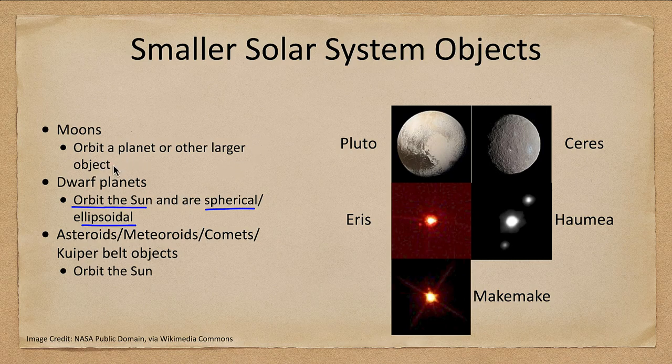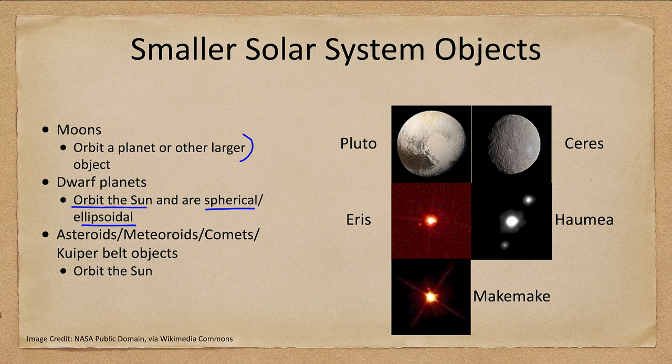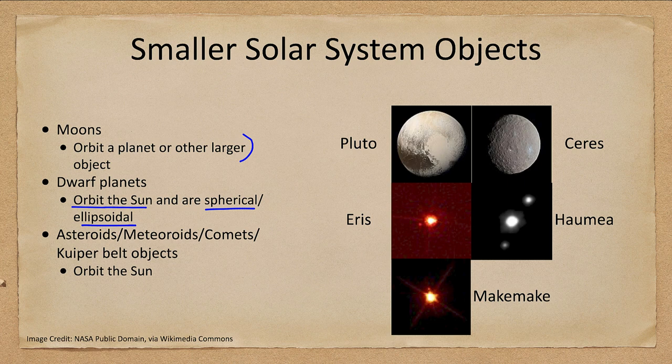And as I didn't emphasize, a moon is an object that orbits a planet or other larger object. So some of the moons are as large as some of the smaller planets, but they are not planets in themselves because they do not orbit the sun.